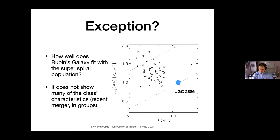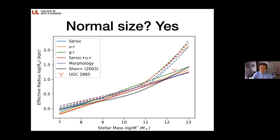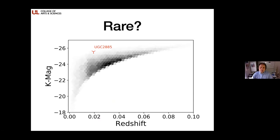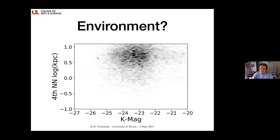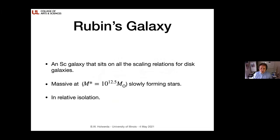It's even bigger but on the lower end of the star formation side. Looking at the stellar mass versus effective radius, on any mass-size relation for galaxies, this galaxy always sits there — but two orders of magnitude from where everybody else is. It seems like this is what you get if you just keep feeding a disk galaxy gas. Is it rare? Looking at two surveys, there are galaxies of similar luminosity, but environmentally speaking, its fourth nearest neighbor is still many megaparsecs away. So it sits on all the galaxy scaling relations, it's massive, but it's in relative isolation — it's just the biggest thing in the neighborhood as a spiral disk.